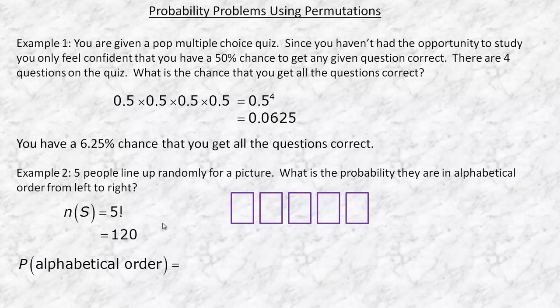Now, the probability that they're in alphabetical order. Let's say we'll take five random names: Brooklyn, Erica, Jade, Lexi, and Noah. Okay, so we've got five names. Notice I did put them in alphabetical order.